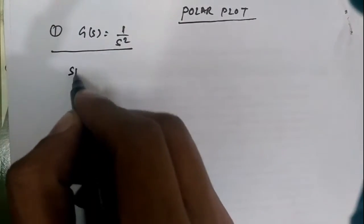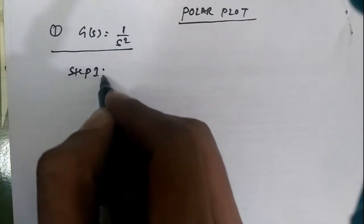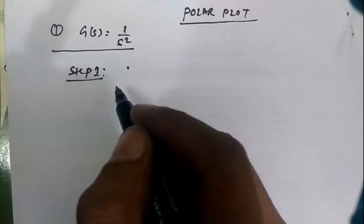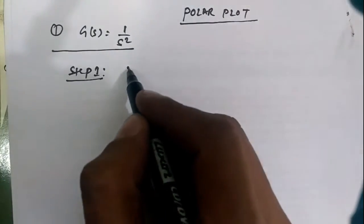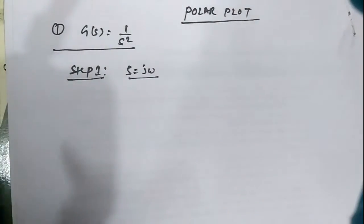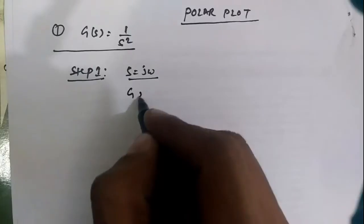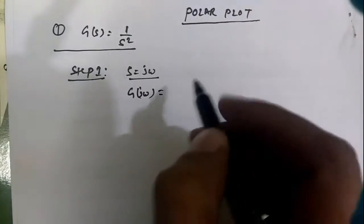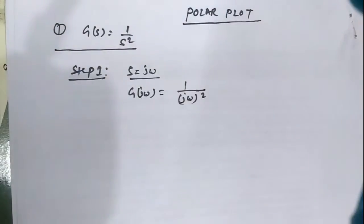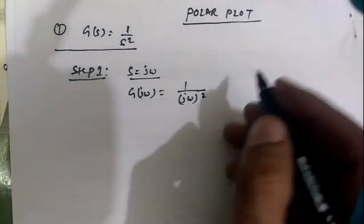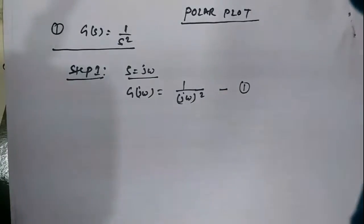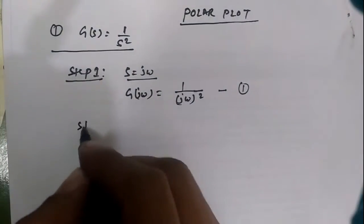Step 1: Given the transfer function G(s) = 1/s², we substitute s = jω into the transfer function. So G(jω) = 1/(jω)². This is equation number 1.